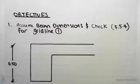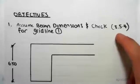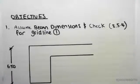Hey guys, the objective of this video is to assume dimensions and we're going to be checking it using clause 8.5.4 to see that it satisfies the deflection limits. We're designing our beam for grid line one.